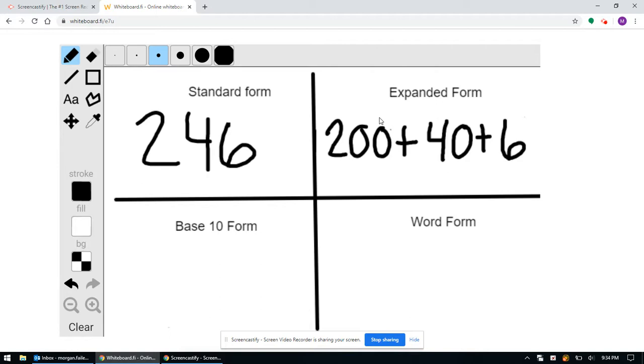Next, we're going to do base 10 form. In base 10 form, we're just going to draw base 10 blocks to represent the number. So, again, starting with the hundreds place, we have two hundreds, so I'm going to draw out two hundreds here – 1, 2.